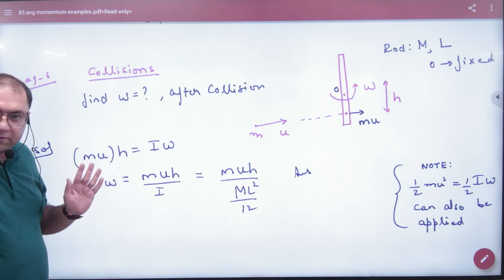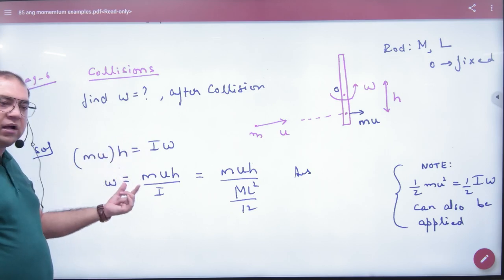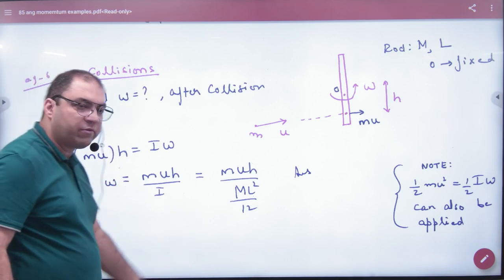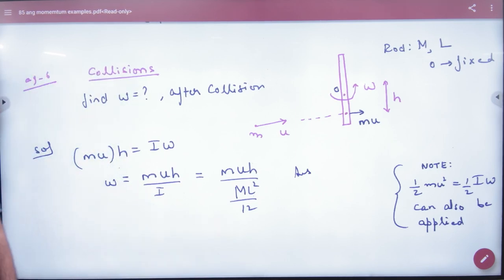So what are the steps? You can't use this equation directly because the rod is hinged, so moment of inertia is ML²/12. So rule number one is clear: whenever this type of collision happens, muh equals I times omega.